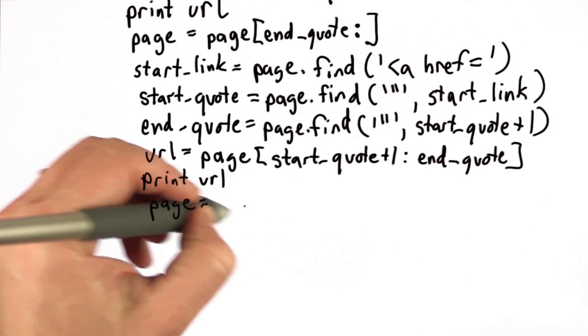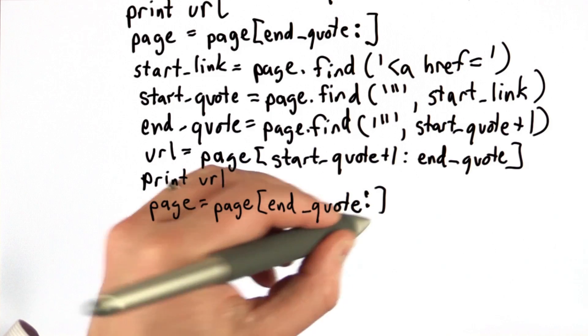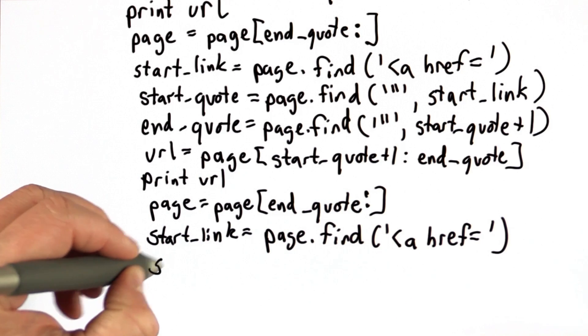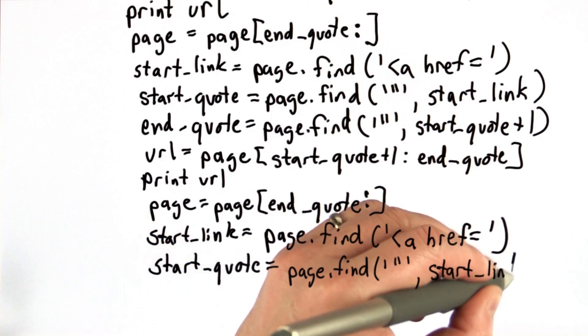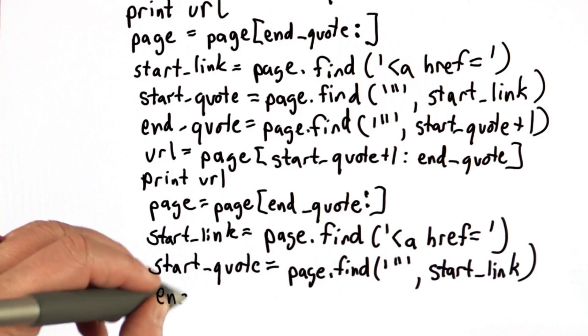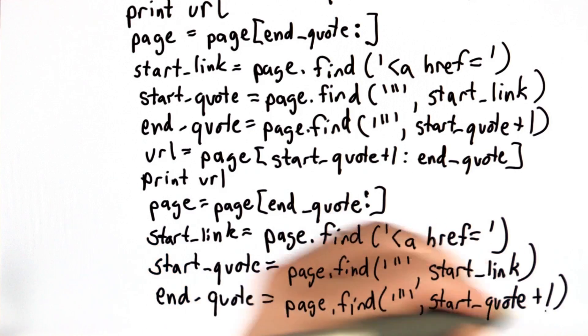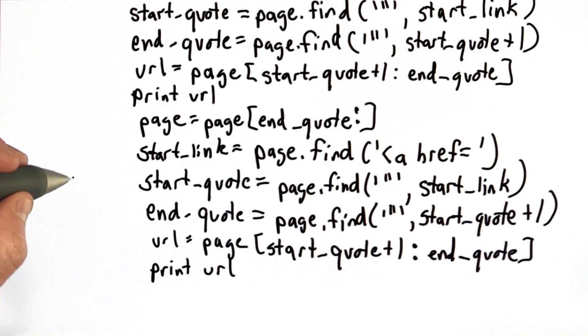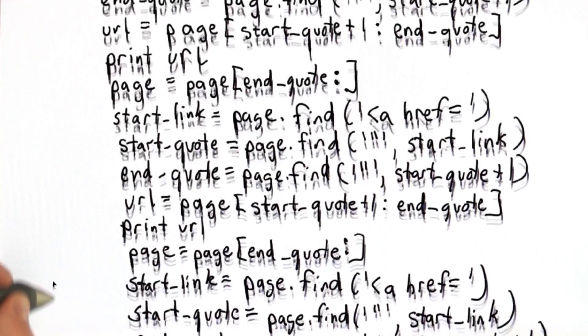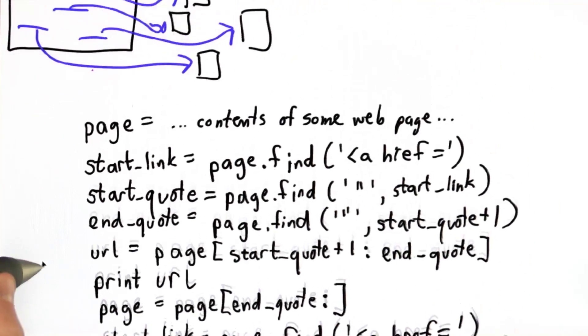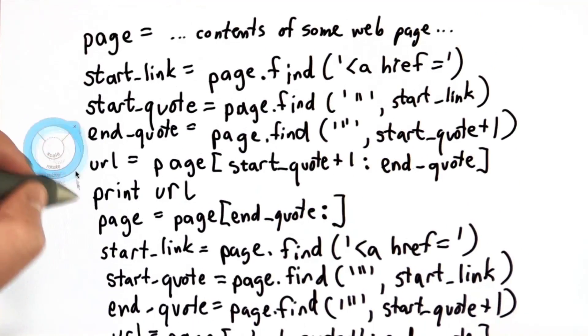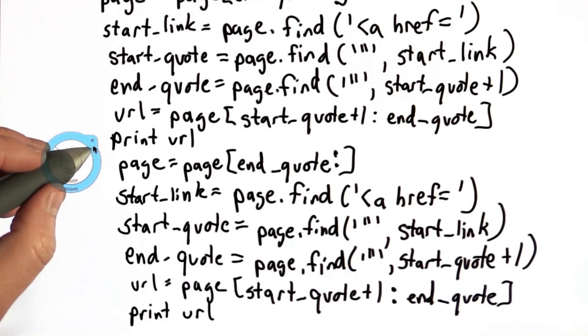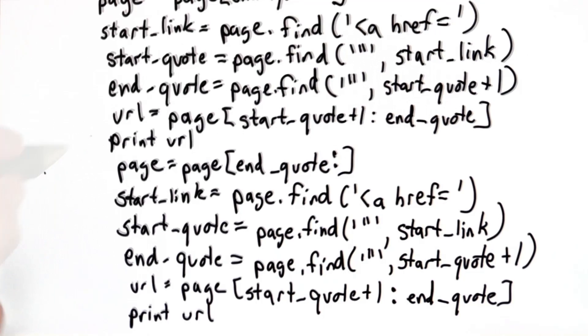If we wanted to print out the first three, well, we could do it again. So now we've got code to print out the first three URLs on the page. Let's scroll all the way up. So we've got print out the first one, keep going, print out the second one, keep going. So this can go on forever.